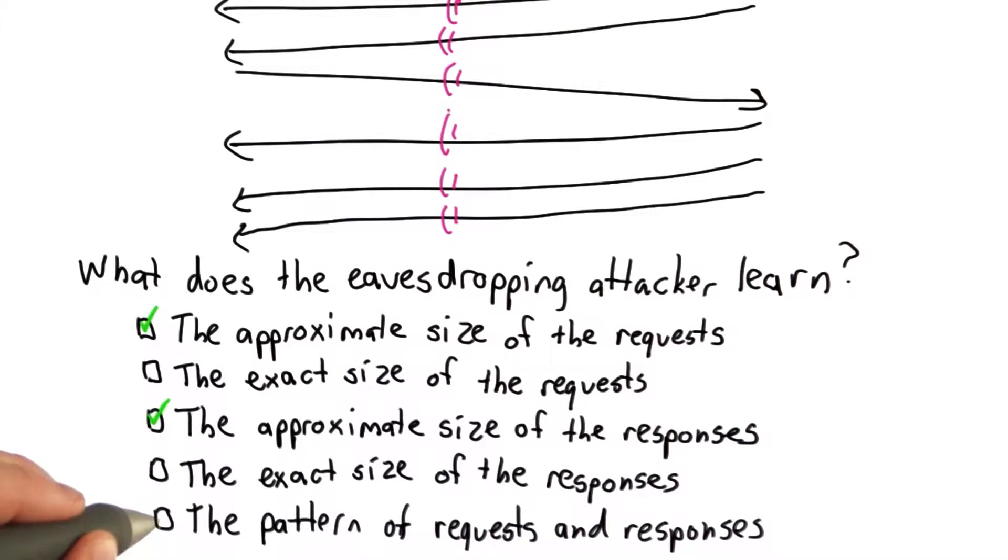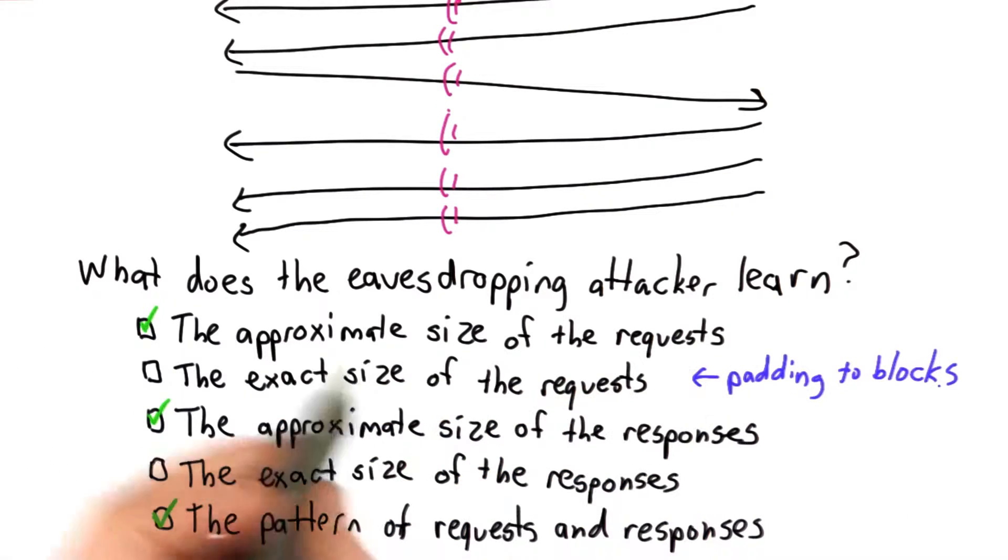The answer is many things that we should be worried about. The attacker might not learn the exact size because of padding on the request up to the block size. The same thing for the responses. The attacker also learns the pattern, and this reveals a lot about a web page.